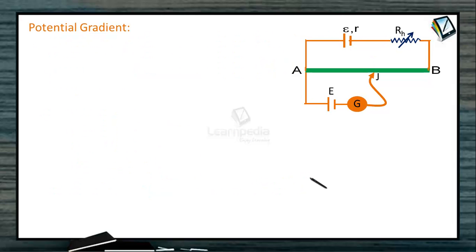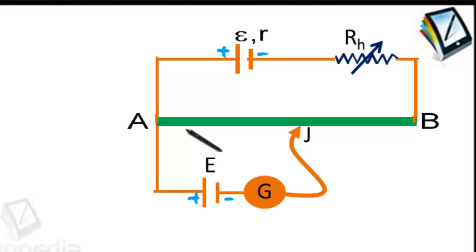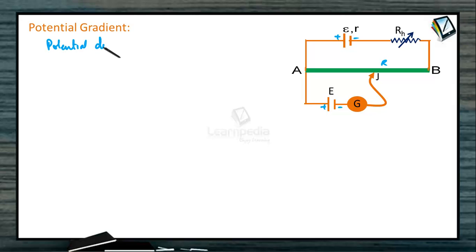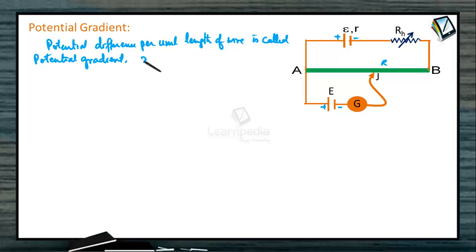Potential gradient is defined as the potential difference or fall of potential per unit length of wire. It is given by X = V / L, where V is IR, in units of volts per meter. The current I in the primary circuit is given by I = E divided by the total resistance.